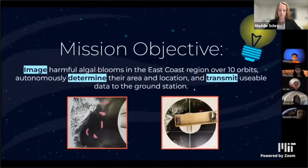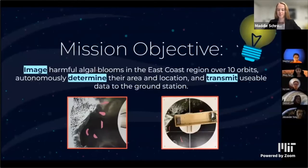Our mission objective is to image harmful algal blooms in the East Coast region over 10 orbits, autonomously determine their area and location, and transmit useful data to the ground stations. The algal blooms are simulated by using red cardstock pieces, the orbits are simulated using the orbiter, and the East Coast region is simulated by using 2D pictures.